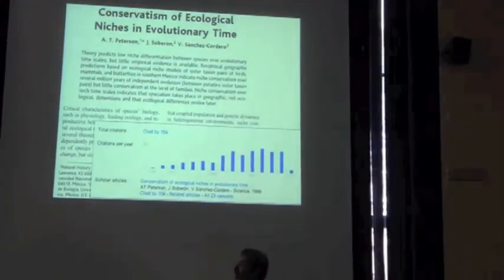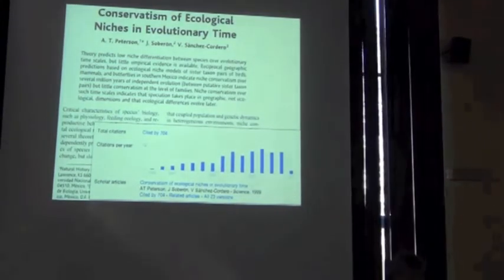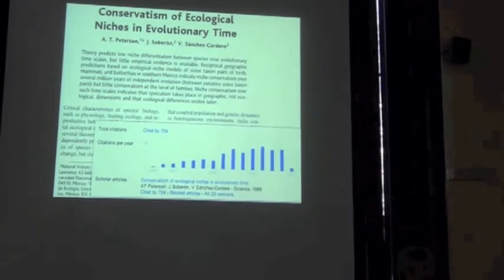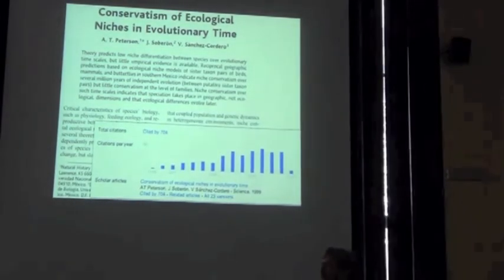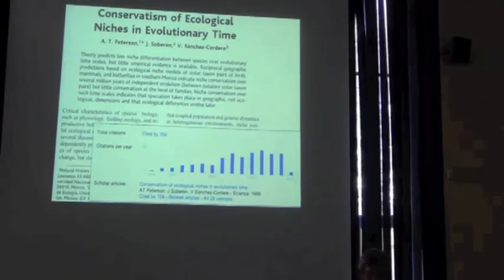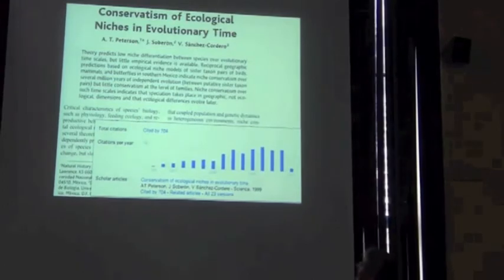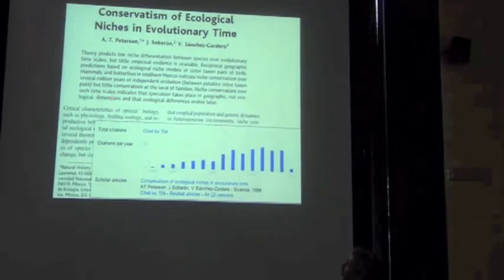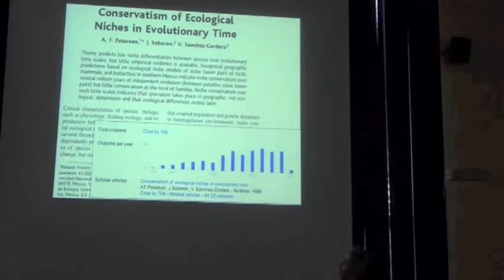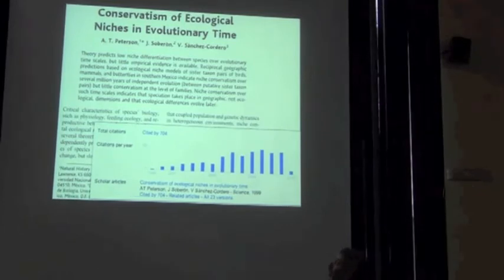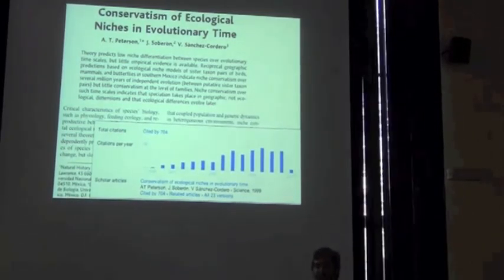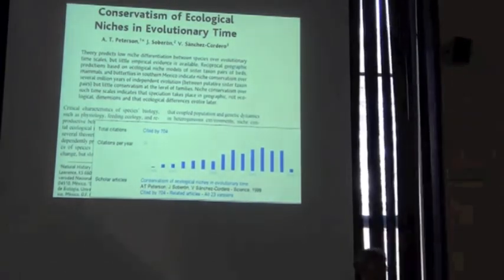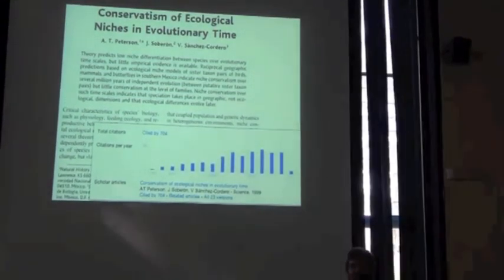In 1999, with a couple of colleagues, I published this paper in Science, precisely because we were dealing with these questions of whether speciation commonly involves ecological change or not. As you can see, this paper has gotten a little bit of attention. But really what we were after — notice this last sentence — niche conservatism over evolutionary time scales indicates that speciation takes place in geographic, not ecological, dimensions, and that ecological differences evolved later. That's a pretty bold statement, not completely substantiated by the analyses we did, but it was honestly and well intended.